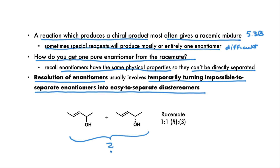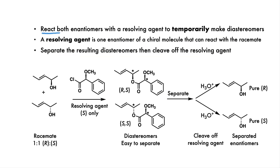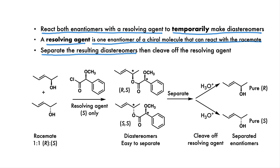Let's look at how we would separate this racemic mixture of chiral alcohols. To do this, we react both enantiomers with a resolving agent to temporarily make a pair of diastereomers. A resolving agent is one enantiomer of a specialized chiral molecule, which can react with both molecules in the racemate. In our example, the resolving agent is the S enantiomer only.